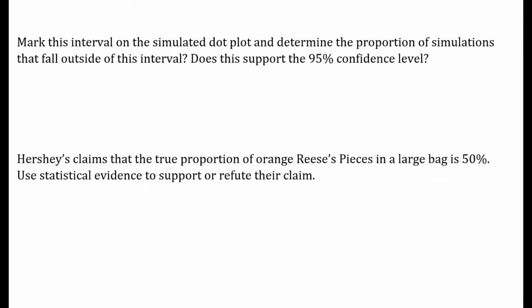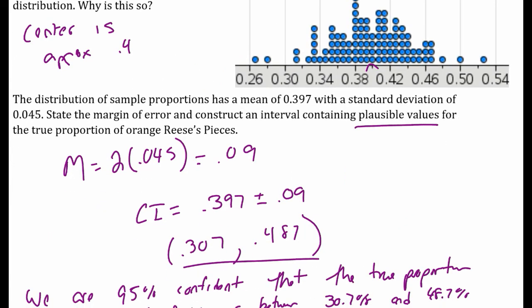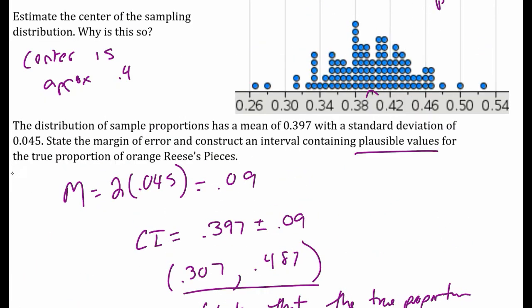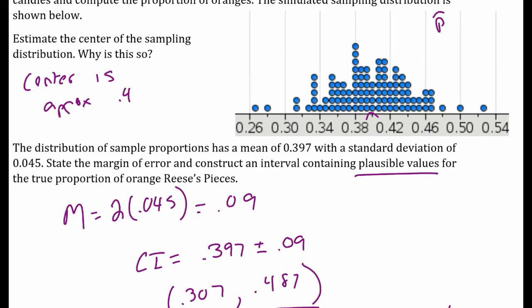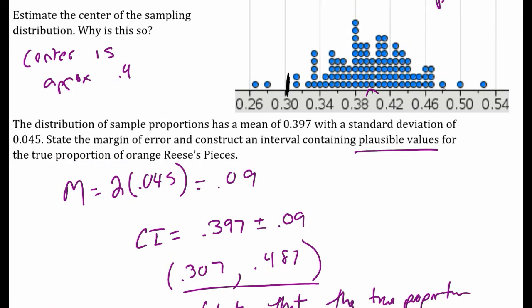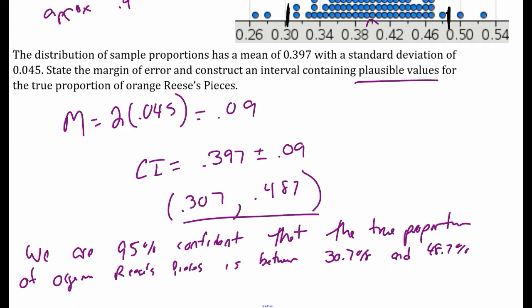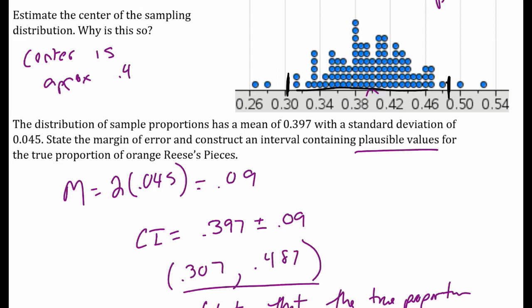Mark this interval on the simulated dot plot. We're going down to 0.307, which is just about here, and up to 48.7. This interval represents the plausible values for my true population proportion.